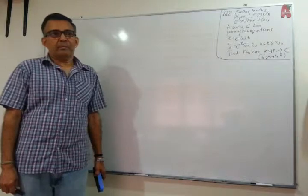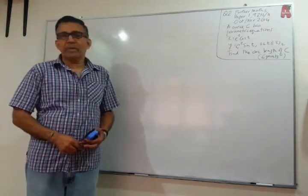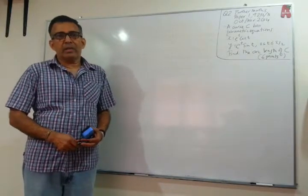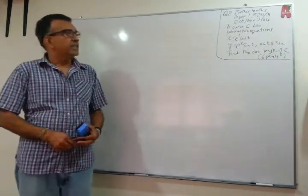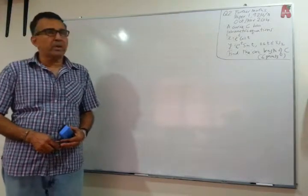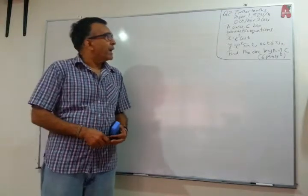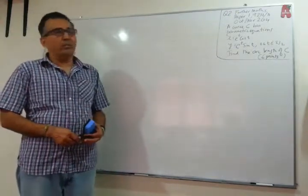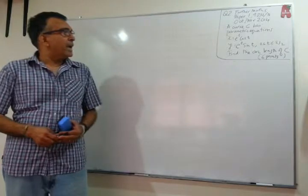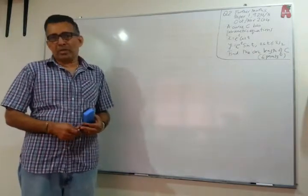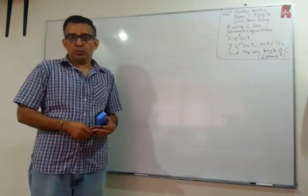Hello, welcome to MathCenter.com. We want to spend a few minutes in this video looking at a problem which came out in the recent sitting of the CIE exams, the Further Maths paper, paper 1, October-November 2014. The subject code is 9231/11, and the question is question number 2. We want to talk about the question, the general ideas surrounding it, and see how we get to the solution.